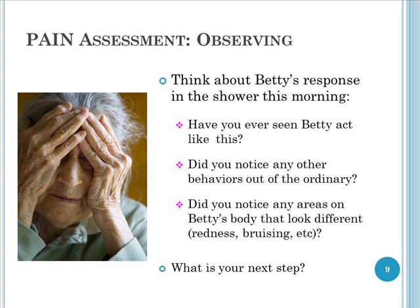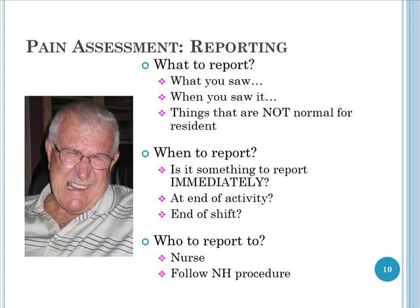The next step is most important: doing the observing is the first step, but it needs to be communicated. Reporting what you've observed is another key element. So what do you report? What you saw, when you saw it, and things that are not normal for that resident — all of these need to be communicated and reported.